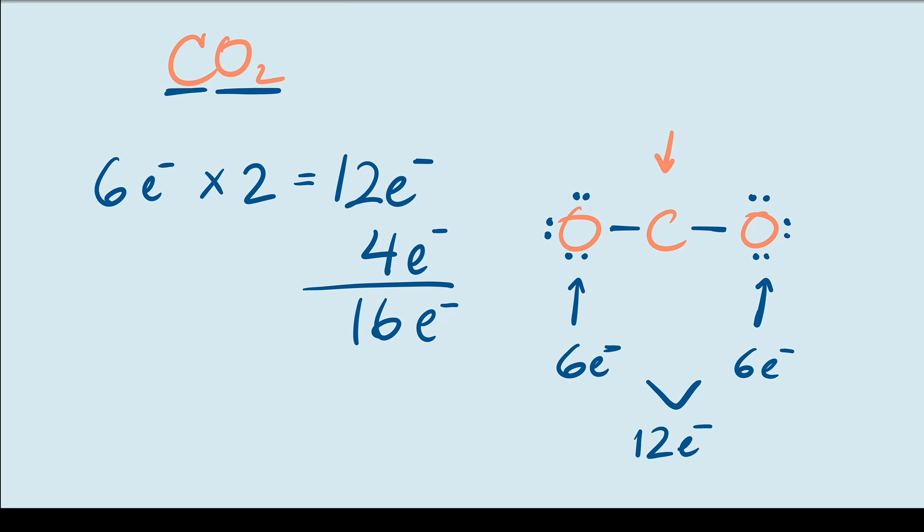An easy way to fix this is to turn a lone electron pair into a bond. Not only does this give atoms another pair of electrons to fill their octets, but it also lets the atom losing the lone pair keep its octet. Let me show you.